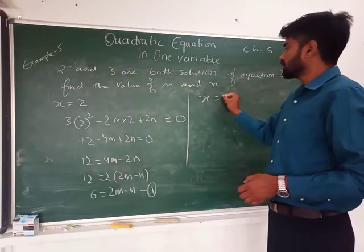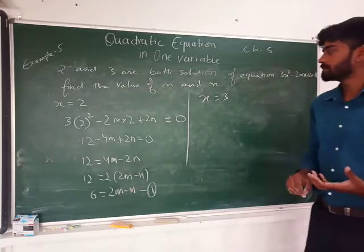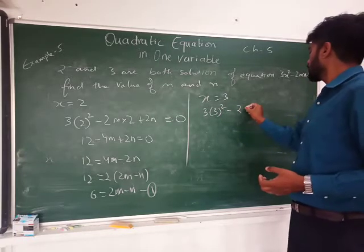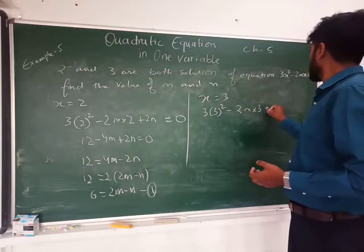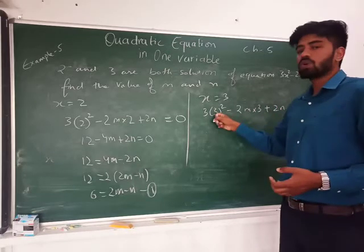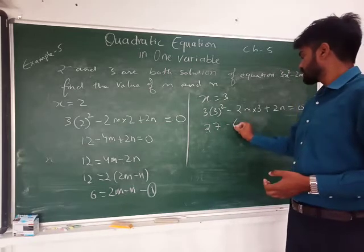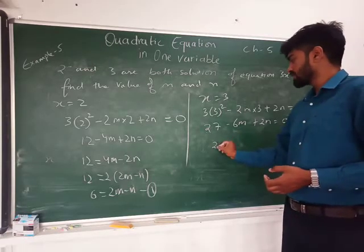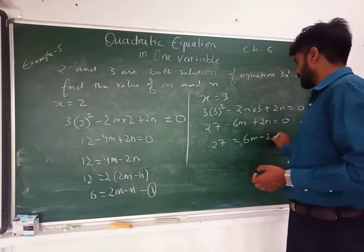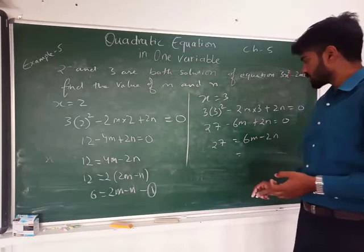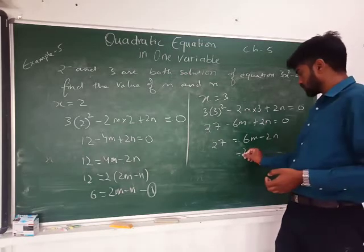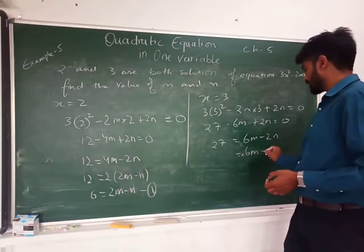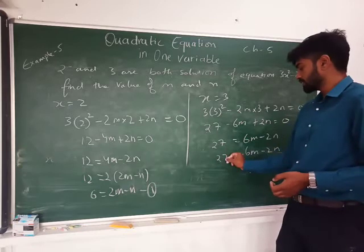Now put x = 3 into the equation. I get 3(3)² minus 2M times 3 plus 2N = 0, giving 27 minus 6M plus 2N = 0. Shifting: 27 = 6M minus 2N. This is my second equation: 6M minus 2N = 27.